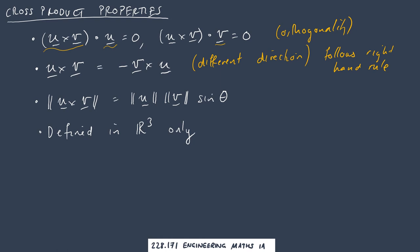Now the length of u cross v has some meaning, and it equals the length of u times the length of v times sine theta. So it looks very similar to our dot product formula. This time though, it's sine theta.